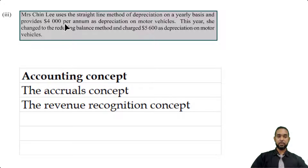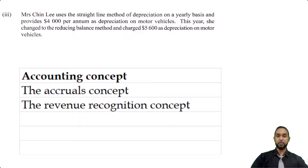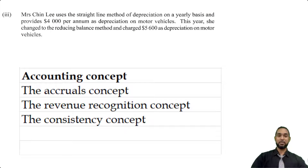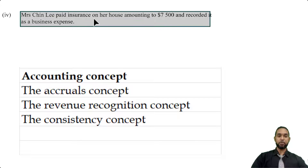Next, Mrs. Chinlee uses the straight-line method of depreciation on a yearly basis and provides four thousand dollars per annum as depreciation on motor vehicles. This year she changed to the reducing balance method and charged five thousand six hundred as depreciation. You can't just be changing depreciation methods or the way you treat certain accounting items from period to period unless you have a very good reason — doing this breaks the consistency concept.